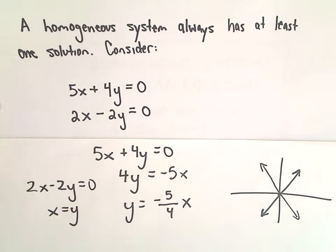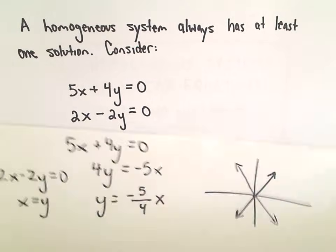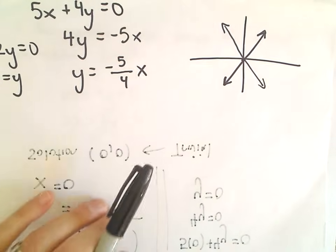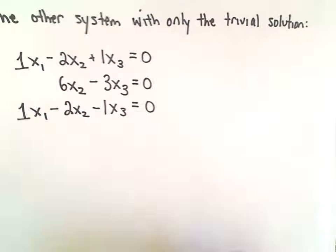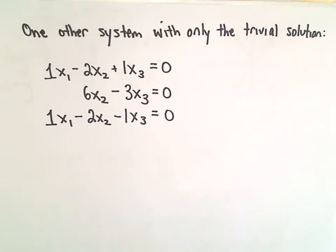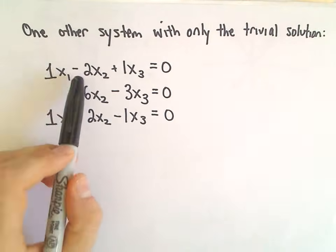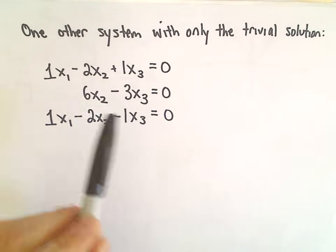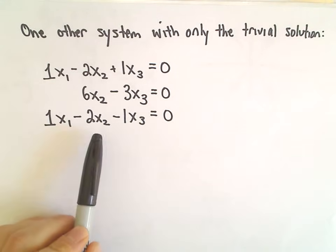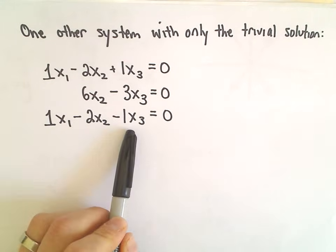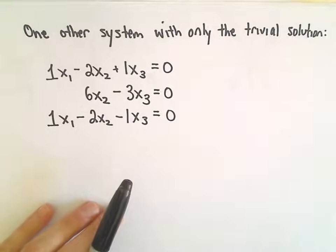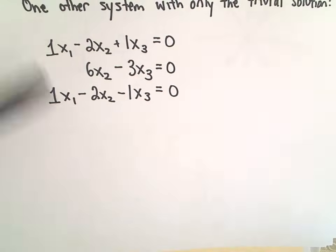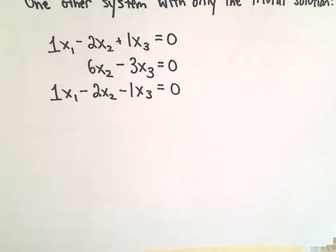A homogeneous system always has at least one solution — in this case the trivial solution (0, 0), and nothing else. Let's look at one more example that only has the trivial solution: x sub 1 minus 2x sub 2 plus x sub 3 equals 0; 6x sub 2 minus 3x sub 3 equals 0; and x sub 1 minus 2x sub 2 minus x sub 3 equals 0. We want to show this only has the trivial solution using row reduction.